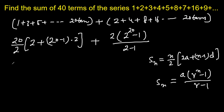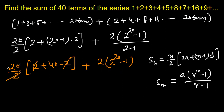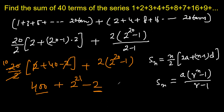Now we solve it. For the AP: 20 by 2 times (2 plus 38), which simplifies to 10 times 40 equals 400. For the GP: 2 times (2 to the power 20 minus 1), which equals 2 to the power 21 minus 2. Combining, 400 minus 2 gives 398, so the final answer is 398 plus 2 to the power 21.